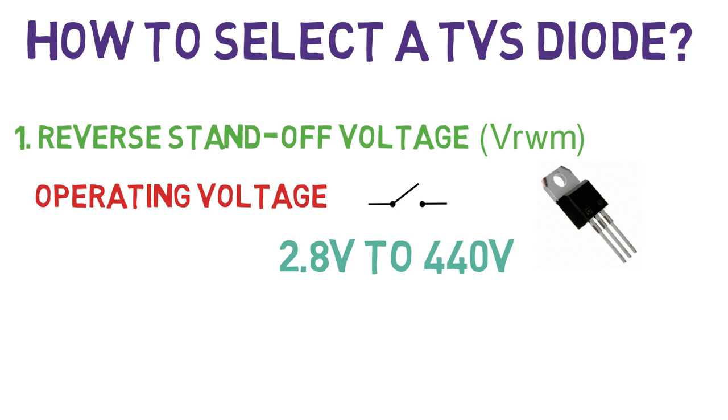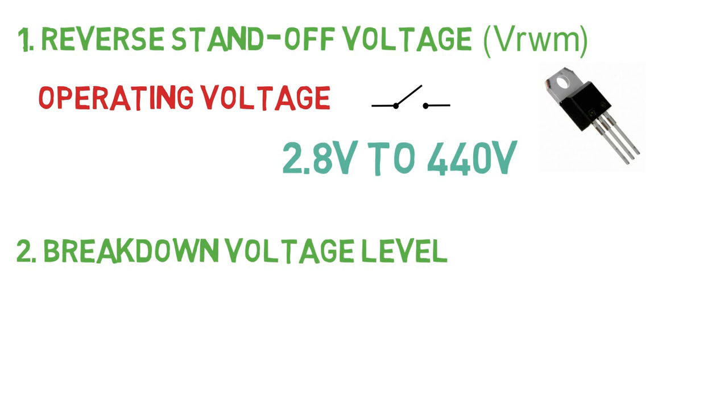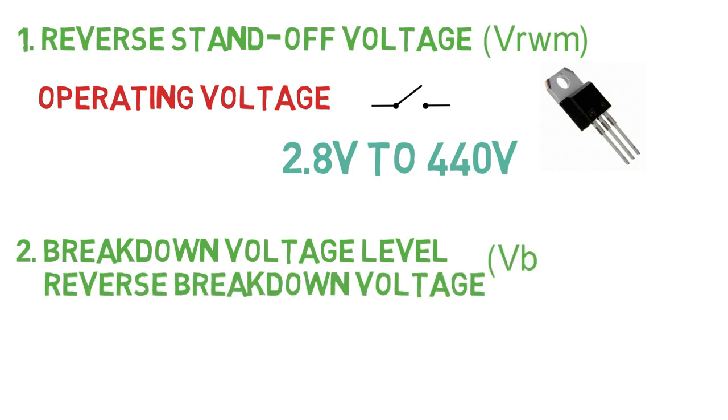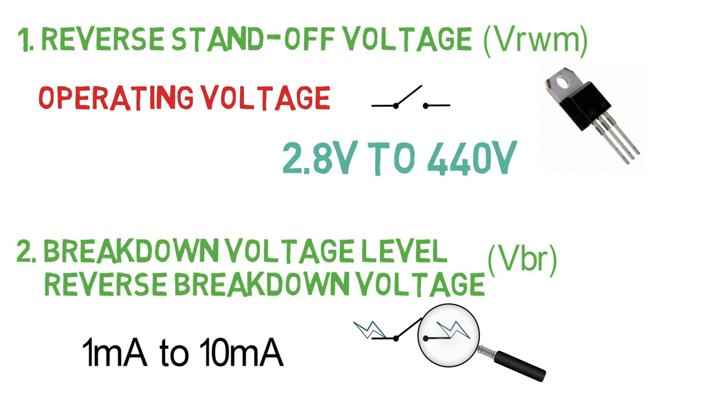Next is the breakdown voltage level. It's also known as reverse breakdown voltage VBR. At this point, the TVS diode starts to conduct and resistance decreases for the transient state. This voltage is measured by testing, when the current in the diode increases like from 1mA to 10mA depending upon the diode's characteristics.